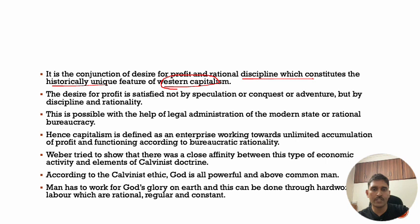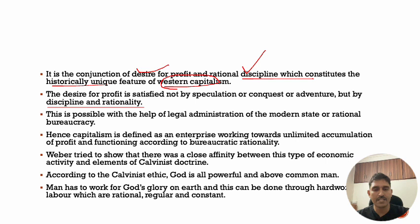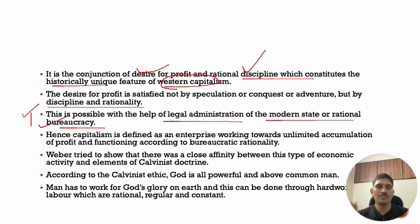Weber identified two main traits of capitalism: desire for profit, and rational discipline. He said both these things are found in Calvinism — in the Calvinist doctrine or Protestant ethic. The desire for profit is satisfied not by speculation or conquest, but by discipline and rationality. Profit maximization can only happen when your entire system is rationally organized, which requires a bureaucratic structure.